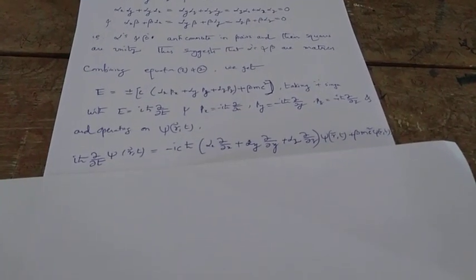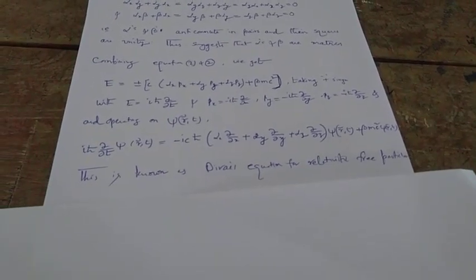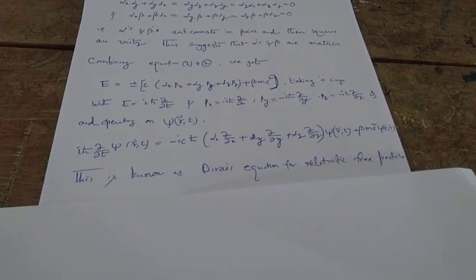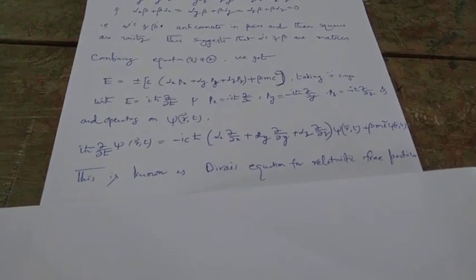This is what we refer to or call as the Dirac equation for a relativistic free particle. That's it for this video, and thanks for watching.